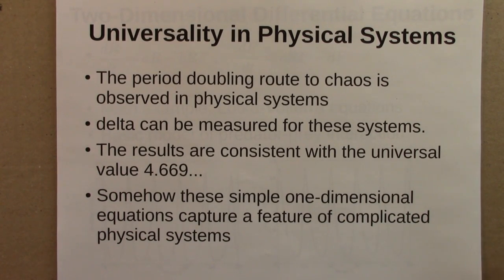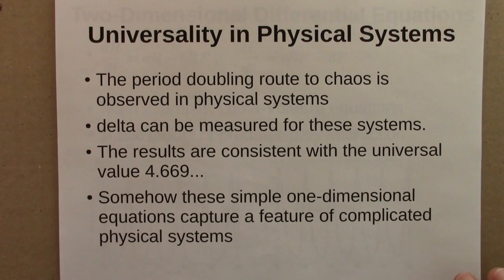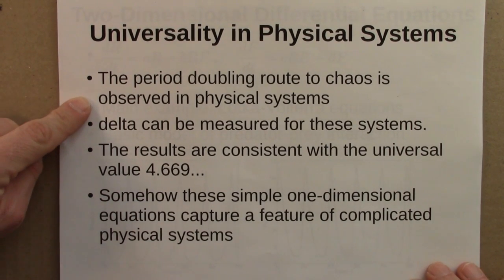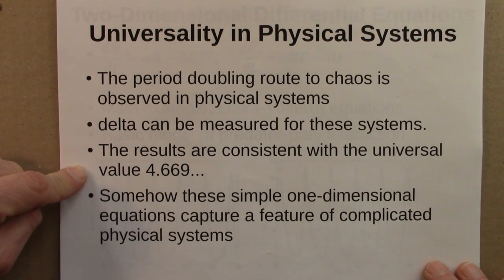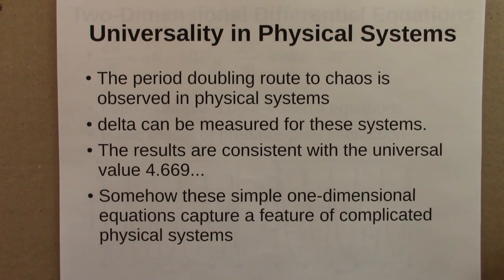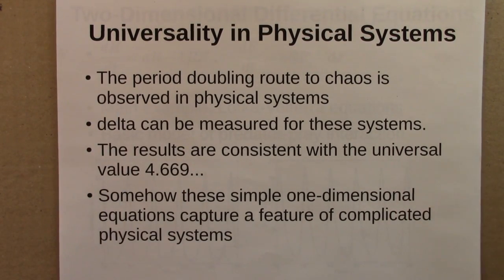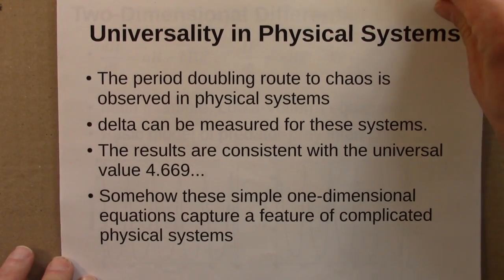To me what's even more amazing is that this has physical consequences. Physical systems show the same universality. So the period doubling route to chaos is observed in physical systems. I talked about a dripping faucet and convection rolls and fluid. And one can measure delta for these systems. It's not an easy experiment to do but it can be done. And the results are consistent with this universal value 4.669. And so what this tells us is that somehow these simple one dimensional equations, we started with a logistic equation and obviously made up story about rabbits on an island, that it nevertheless produces a number, a prediction that you can go out in the real physical world and conduct an experiment with something much more complicated and get that same number. So this I think is one of the most surprising and interesting results in dynamical systems.